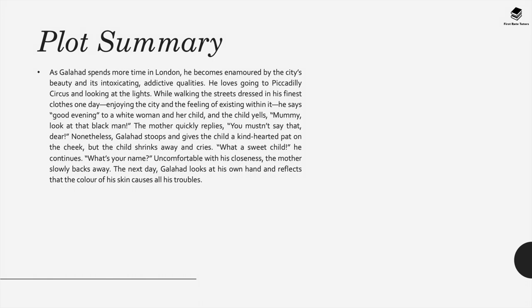As Galahad spends more time in London, he becomes enamoured by the city's beauty and its intoxicating, addictive qualities. He loves going to Piccadilly Circus and looking at the lights, and while walking the streets dressed in his finest clothes one day, enjoying the city and feeling his existence within it, he says good evening to a white woman and her child. The child yells, 'Mummy, look at that black man,' and the mother quickly replies, 'You mustn't say that.' Nevertheless, Galahad stops and gives the child a kind-hearted pat on the cheek, but the child shrinks away and cries. The next day, Galahad looks at his own hand and reflects that the colour of his skin causes all his troubles.